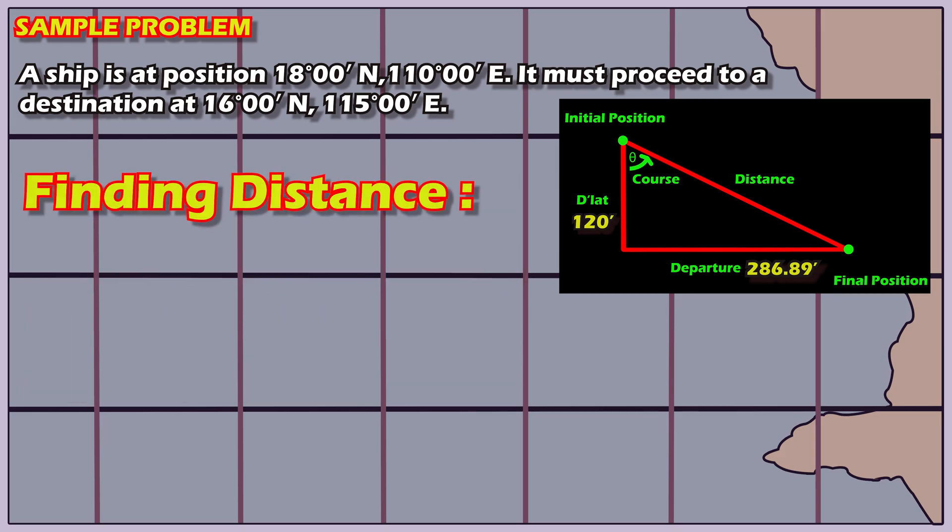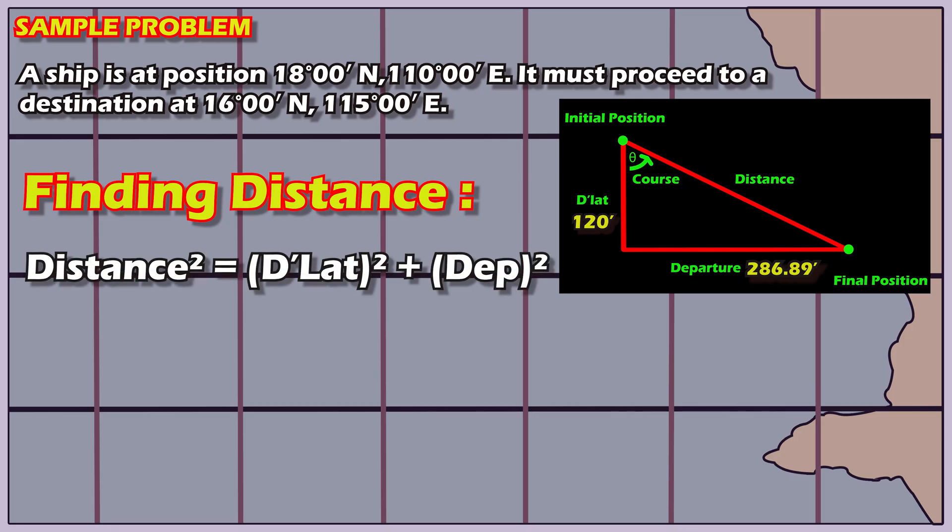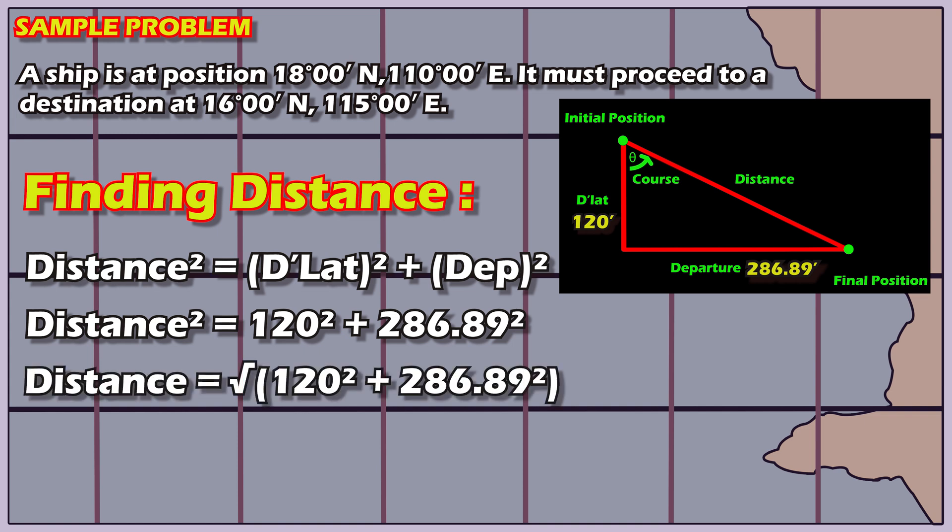Finding the distance. To find the distance, we use Pythagoras' theorem. Distance squared equals the difference of latitude squared plus the departure squared. That is, 120 squared plus 286.89 squared. Taking the square root of that sum gives us 311 nautical miles.